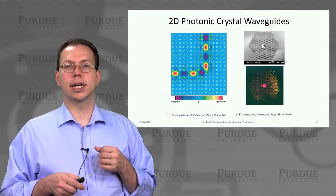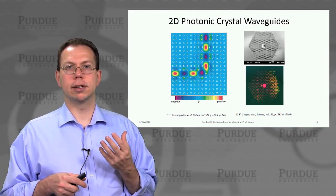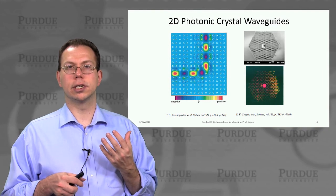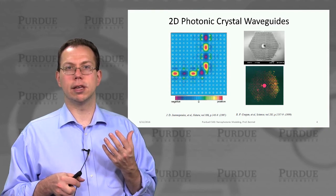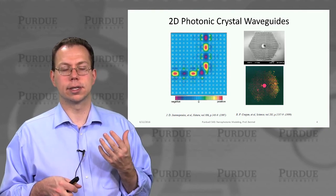In the next lecture, we'll talk about what are some other kinds of non-obvious structures that you can make using our understanding of 1D and 2D photonic crystals.